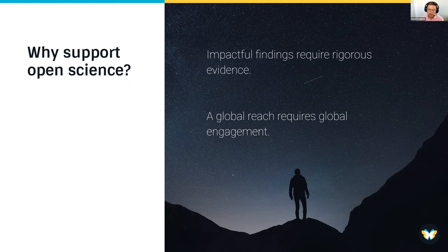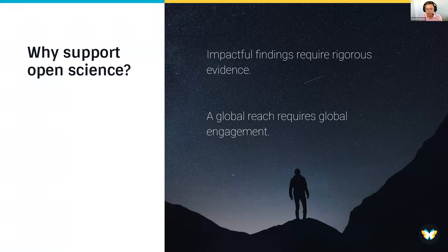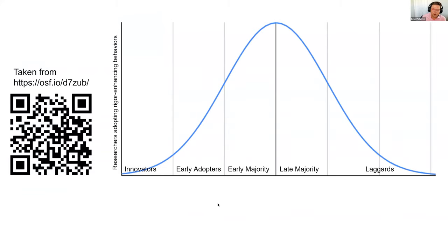We're Templeton World Charity Foundation — we work hard to have a global reach, and that requires global engagement. We're very aware of issues of access and equity, where a lot of people around the world just don't have access to the original research papers. That's a problem, and while it's not always the easy solution, we think it's one that's still worth trying to solve. I have a slide here from a presentation that Brian Nosek did a few months ago — you can scan the QR code for that presentation, as the Center for Open Science has all their presentations on the Open Science Framework.